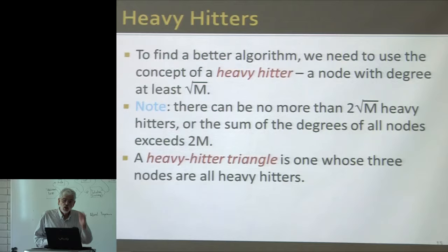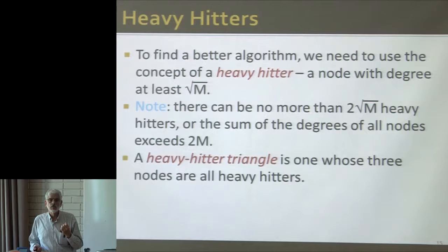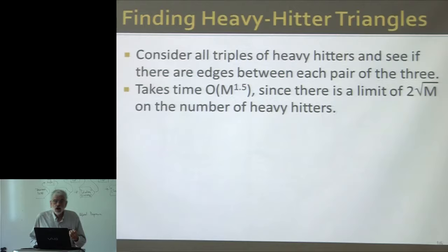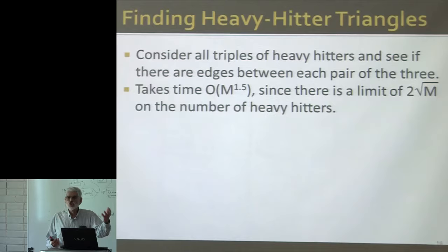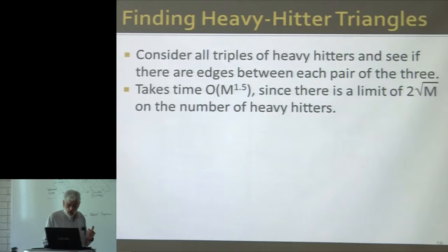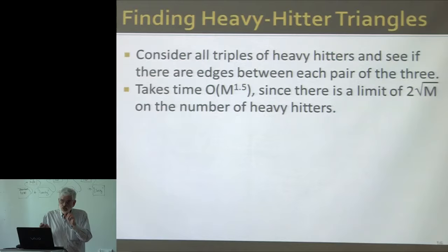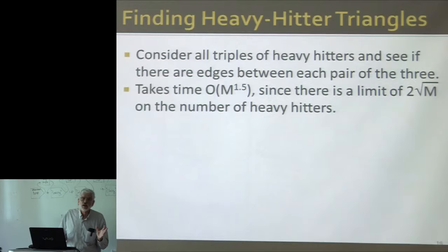The number of heavy hitters has to be relatively small. Let's call a triangle a heavy hitter triangle if all three of its nodes are heavy hitters. I can find the heavy hitter triangles in relatively little time. Since there are only order √m heavy hitters, the number of triples of heavy hitters is at most order m^1.5. So I can look at all the triples of heavy hitters, check whether the three edges exist, and therefore find all the heavy hitter triangles in time order m^1.5.